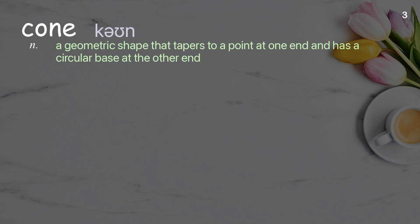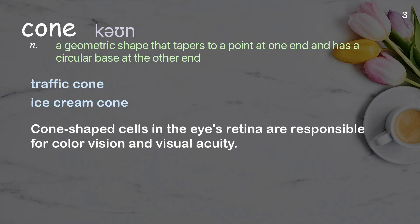Cone: a geometric shape that tapers to a point at one end and has a circular base at the other end. Examples: traffic cone, ice cream cone. Cone-shaped cells in the eye's retina are responsible for color vision and visual acuity.